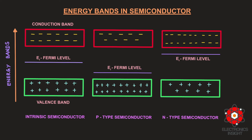For an intrinsic semiconductor — a pure semiconductor without any doping — the number of holes in the valence band equals the number of electrons in the conduction band. Since charge carriers are equal in both bands, the Fermi level lies exactly in the middle of the valence band and the conduction band.